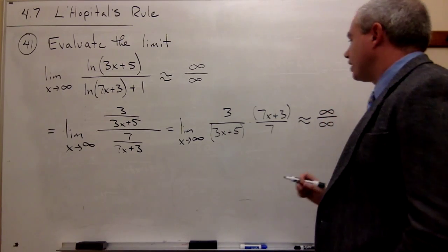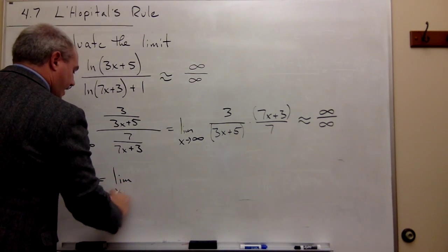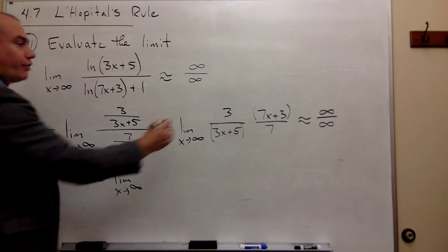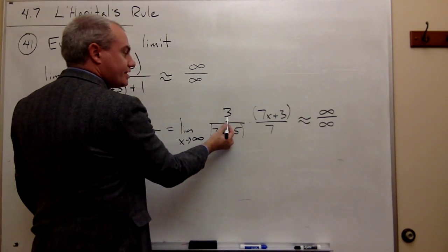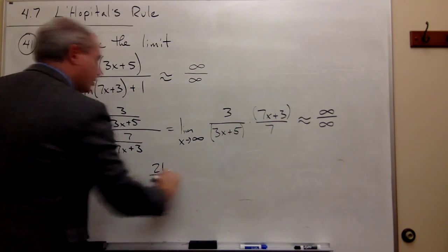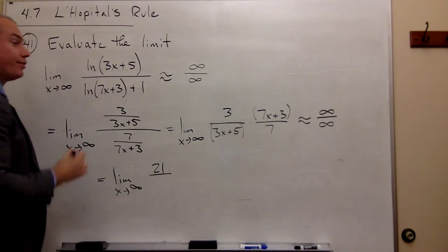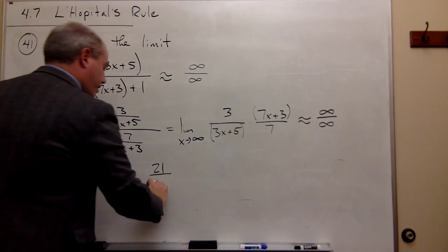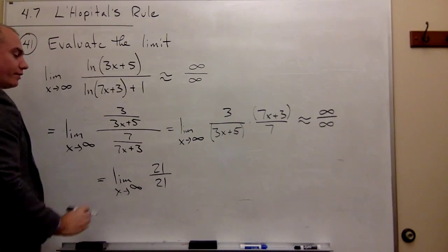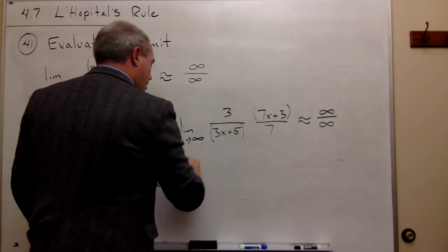And what we would get is the limit as x goes to infinity of, well, the derivative of the top, remember there is this 3 times this 7, so the derivative of the top is 21. On the bottom, I have this 3 times this 7, so the derivative of the bottom is 21. And obviously, the limit as x goes to infinity of 21 over 21 is just 1. And so we get our answer.